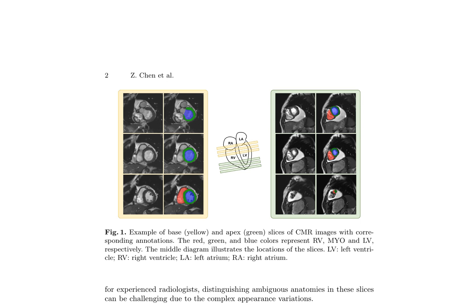In cardiac magnetic resonance imaging, segmenting basal and apical slices is a challenging task that hinders accurate cardiac function analysis. Even experienced radiologists struggle to differentiate ambiguous anatomies due to complex appearance variations. Deep learning segmentation methods, particularly convolutional neural networks (CNNs), have emerged as promising solutions for automating the process. However, despite their potential, 3D networks have not surpassed 2D networks in CMR data due to discontinuity across slices.